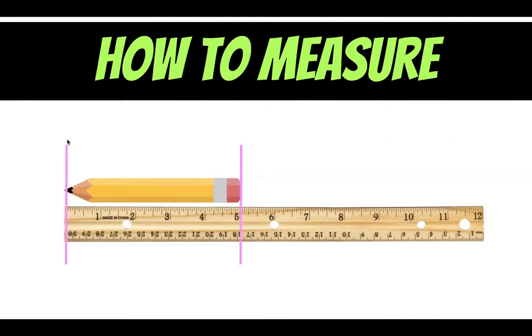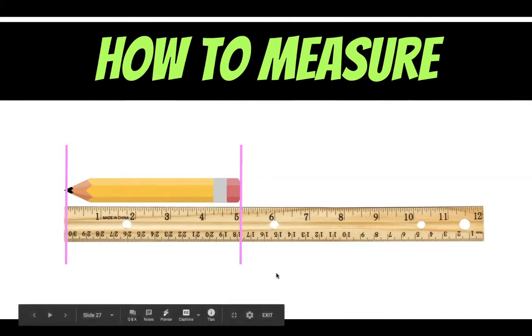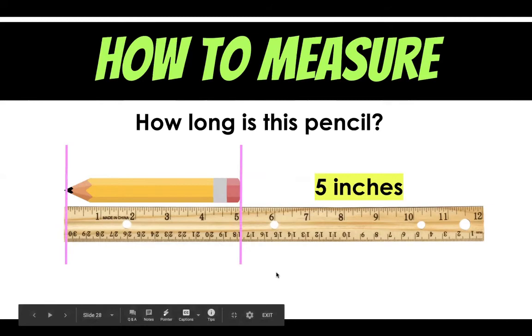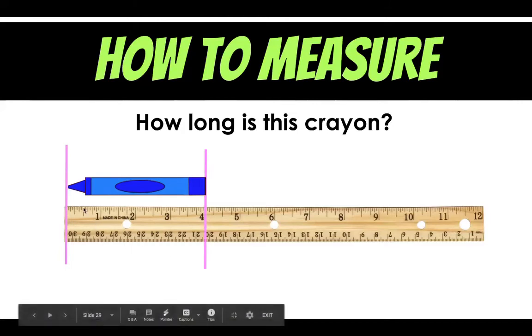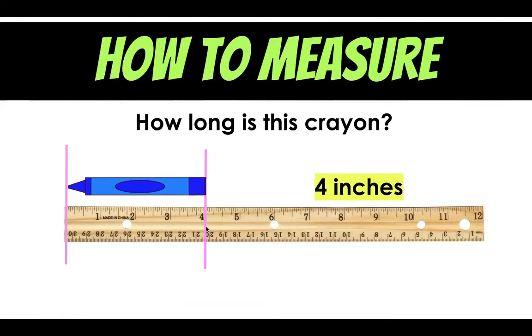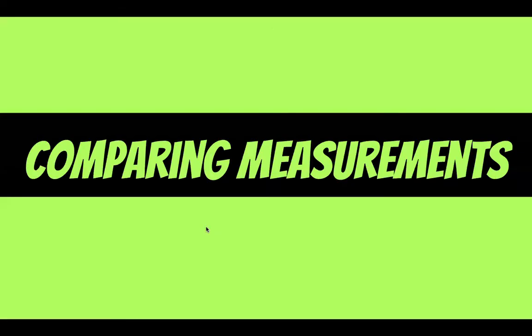Okay so I have this measured up to the first line and then how to measure. I have to look at where the end lines up and I see that this pencil is right at five inches long. How long is this crayon? Go ahead and take a look. I saw that this crayon I lined it up at the front and measured it all the way to the back is four inches long. Now let's compare some measurements.